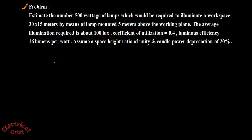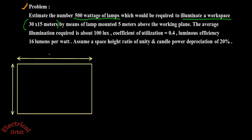Now let's understand this with problem solving. The problem: estimate the number of 500-watt lamps required to illuminate a workspace with dimensions of 30 by 15 meters, using lamps mounted 5 meters above the working plane. So you have a workspace of 30 meters by 15 meters, and you have to use 500-watt lamps to illuminate this entire workspace. The average illumination required is about 100 lux.